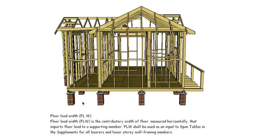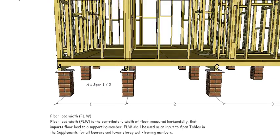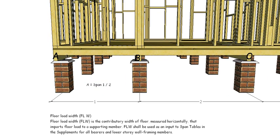So we need to be able to work it out. What we have to do is work out the Floor Load Width for all our different load bearing scenarios. In this case we've got four different piers, and whichever one works out to be the highest is the one we're going to use for all of our calculations. So we'll go through and have a look at these four different scenarios.